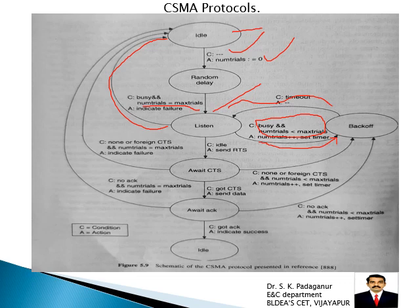If the channel is idle, the node sends an RTS — request to send — asking the neighbor node if it is ready to accept data. The node then waits for a CTS. If the neighbor node is ready, it sends a CTS back. After receiving CTS, the node sends its data packet and waits for an acknowledgement. Once done, it indicates success and returns to idle. If timeout occurs, it checks again whether num_trials has reached the maximum.